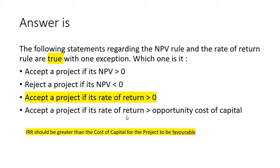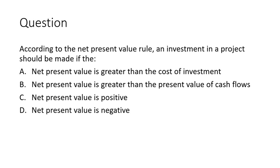The rate of return should be greater than the cost of capital for the project to be favorable. Even if the rate of return is greater than 0, it doesn't mean it's profitable. For example, if you borrowed money at 10% interest and the rate of return is only 5%, even though 5% is greater than 0, it's not enough to cover the interest. So we accept a project if the rate of return is greater than the cost of capital, not merely greater than 0.